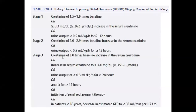Stage 2: creatinine 2 to 2.9 times the baseline, urine output less than 0.5 mL/kg/hour. Stage 3: serum creatinine increase to more than 4 mg/dL, urine output less than 0.3 mL/kg/hour for 24 hours or more, or anuria for more than 12 hours, or the patient requires renal replacement therapy.